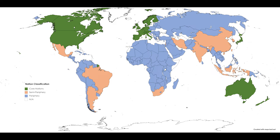The semi-peripheral nations maintain a combination of core and peripheral products and compete with other semi-peripheral nations to elevate themselves to core status. In conclusion, world systems analysis is a comprehensive macro-level framework used to analyze the development of global hierarchy based on the idea that the world economy is capitalistic. Its existence is tied to the existence of core, peripheral, and semi-peripheral nations.